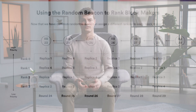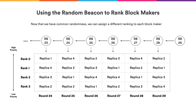Now that we have this common randomness, we're going to use it to rank the block makers every round. For example, using the random beacon created in round 23, we rank the block makers in round 24. At round 24, replica one is the top-priority rank-zero block maker. We still need fallbacks because replica one might not do its job, so replica four is rank one, replica three is rank two, and replica two is the last resort.